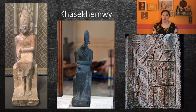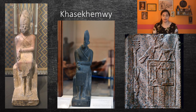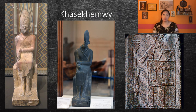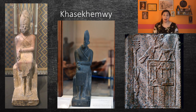Khasekhemwy was quite unique in that his serekh had both a falcon depicting the god Horus and an unknown animal depicting the god Seth. Horus and Seth were nephew and uncle in Egyptian mythology, and Horus defeated Seth after his uncle murdered his father, Osiris. Khasekhemwy had two identical statues of himself — one in a light stone and the other in a dark stone — which may match the duality of Horus and Seth, who often represent the concept of order over chaos. The light stone statue also has a battle scene on one side with the number 47,209 next to it, possibly alluding to those killed in one of his most famous battles.